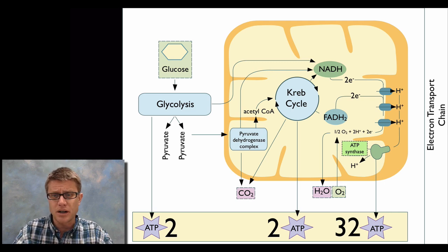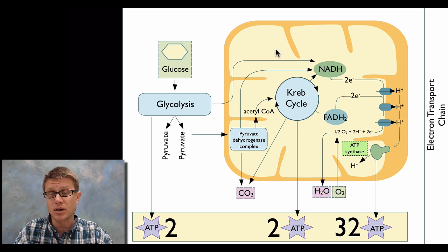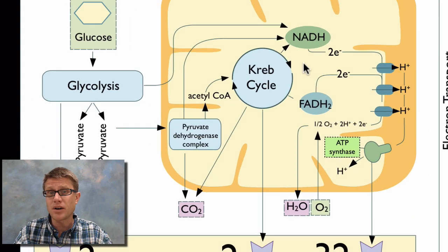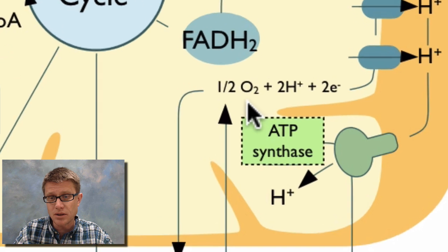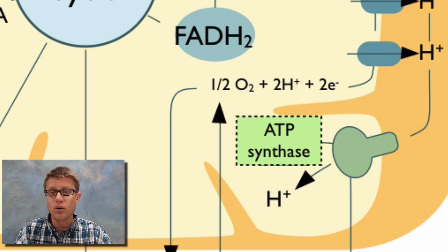But how could we break this process? Well we could break it, number one, if we didn't have any glucose, but we usually have enough food inside our body. We could break this in 2 ways: we could get rid of the mitochondria — so if there was a toxin that destroyed the mitochondria, or if we just didn't have enough mitochondria present — or if we didn't have oxygen. Remember oxygen is right here at the end; it's receiving those electrons. It's the final electron acceptor. And if we don't have that, the whole thing kind of backs up.